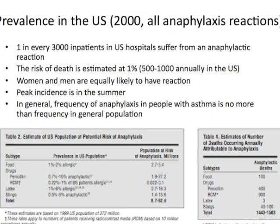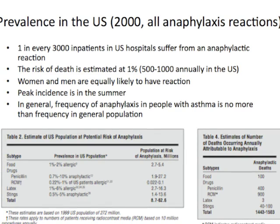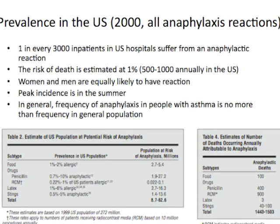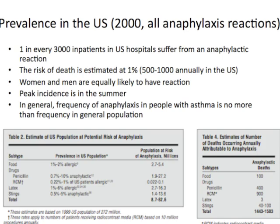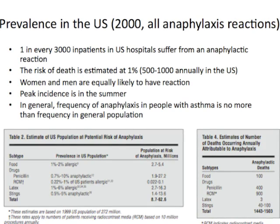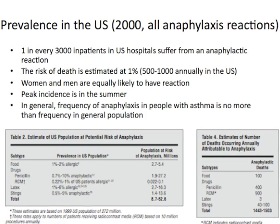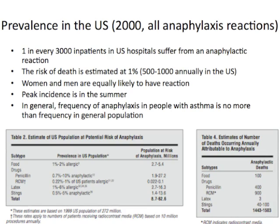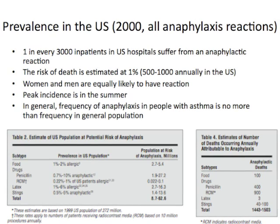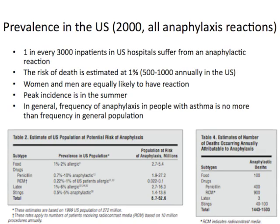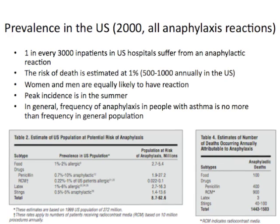Moving on to prevalence: one out of every 3,000 inpatients suffers from an anaphylactic reaction — which seems pretty high — and it carries a 1% risk of death, which is also pretty high. So 500 to 1,000 people annually in the U.S. actually die of anaphylactic reactions, which you can imagine given the bronchoconstriction and other problems. Women and men are equally likely to have a reaction. There's no real selectivity for age either — there could be some genetic components, but not a gender or age difference. The peak incidence is in the summer, probably due to increased exposure to outdoor allergens.